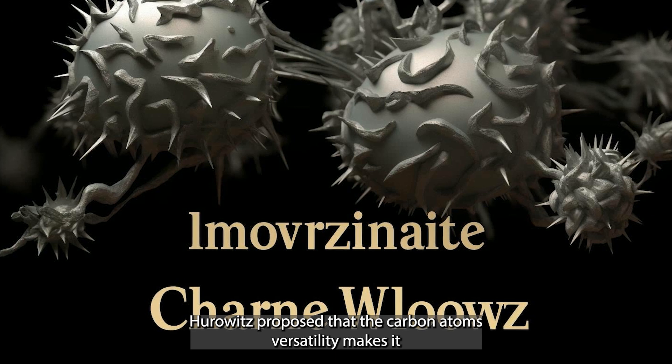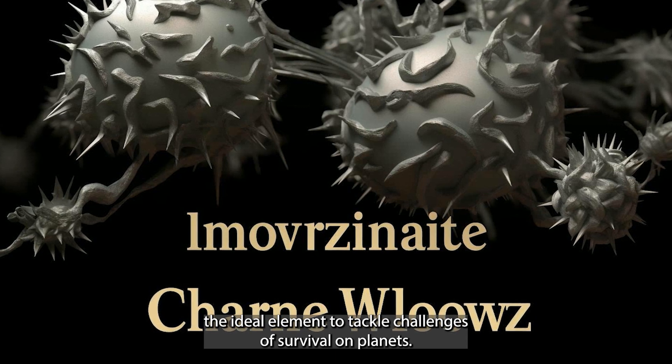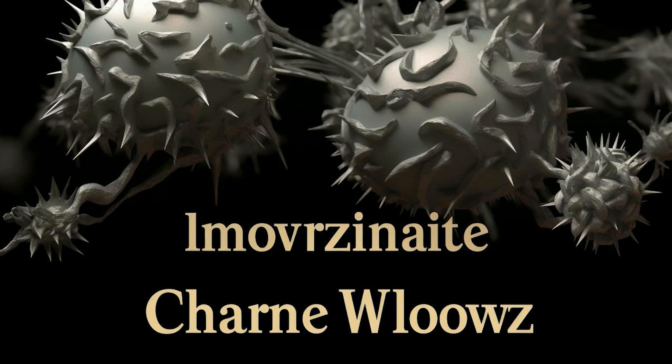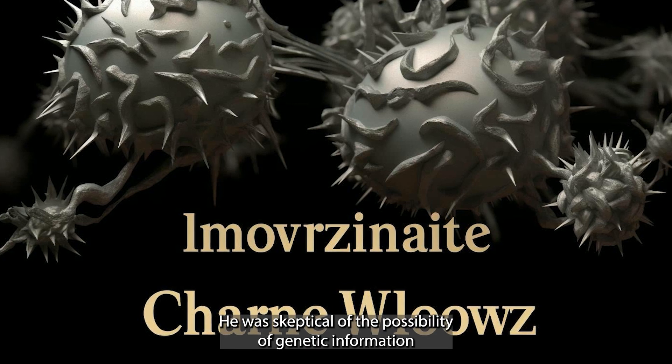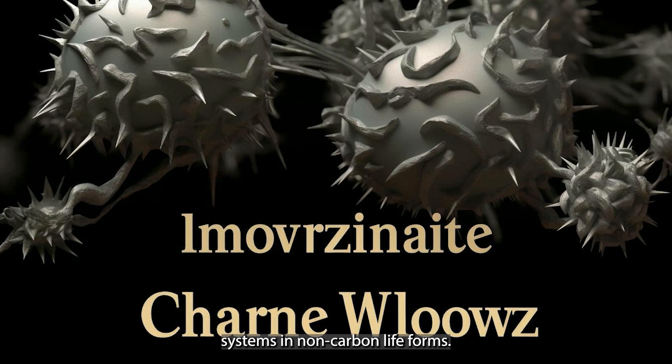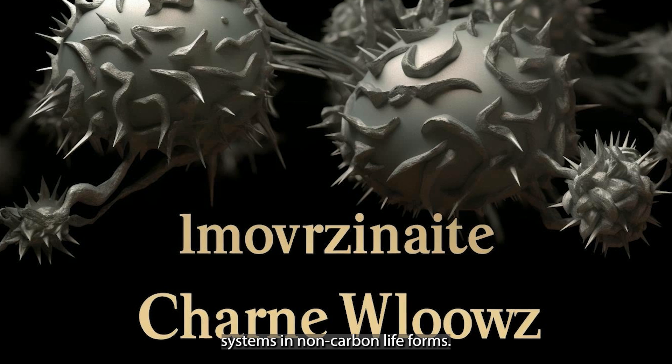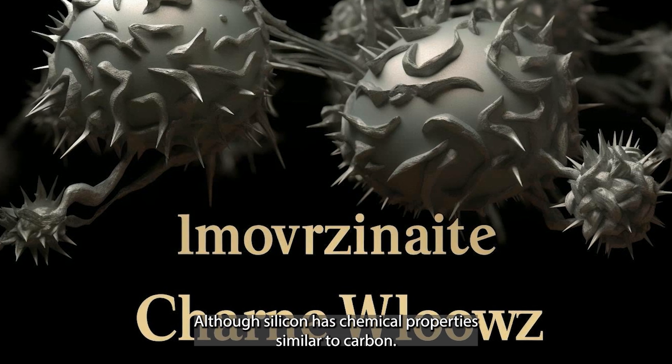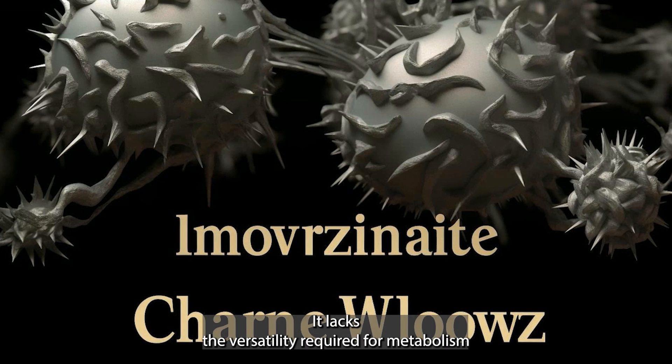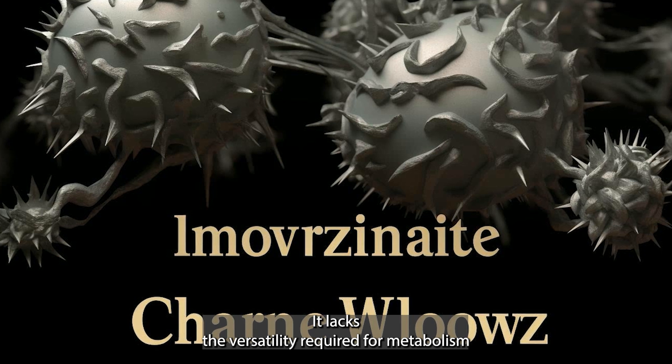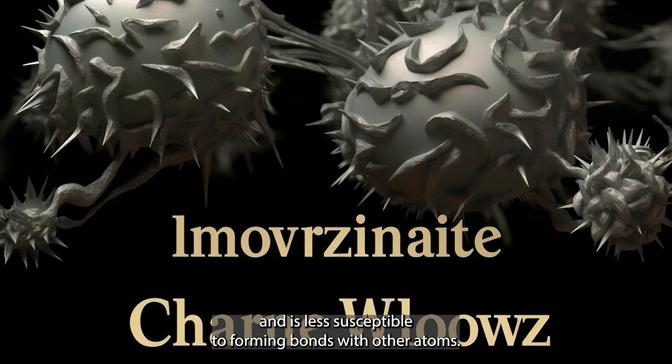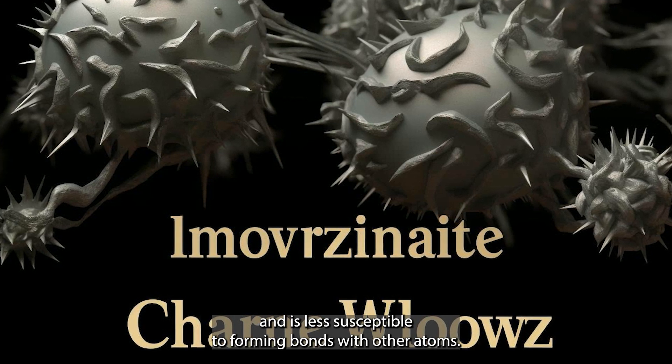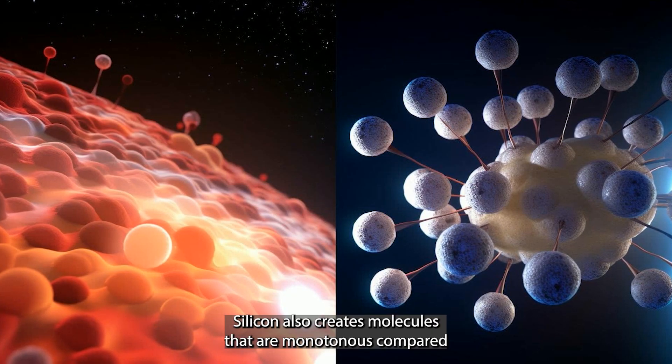Horowitz proposed that the carbon atom's versatility makes it the ideal element to tackle challenges of survival on planets. He was skeptical of the possibility of genetic information systems and non-carbon life forms. Although silicon has chemical properties similar to carbon, it lacks the versatility required for metabolism and is less susceptible to forming bonds with other atoms.